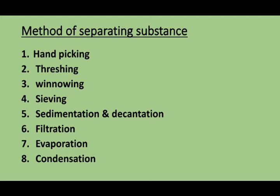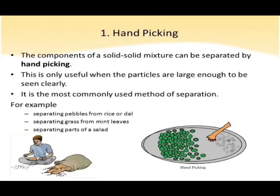Next is the methods of separating substances. Here you can see the various types of methods: hand picking, threshing, winnowing, sieving, sedimentation and decantation, filtration, evaporation, and condensation. These are all methods of separating substances.